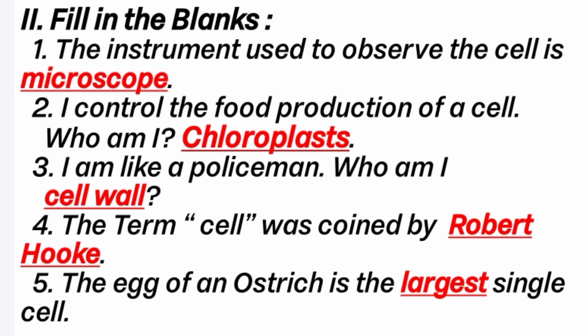Chloroplasts are only found in plant cells. They are used to produce food by the process of photosynthesis.